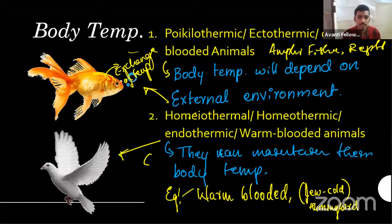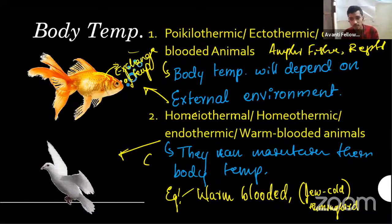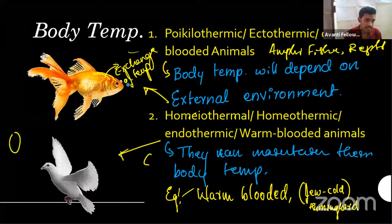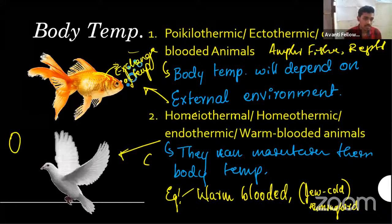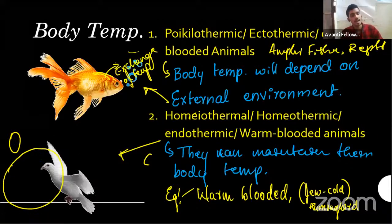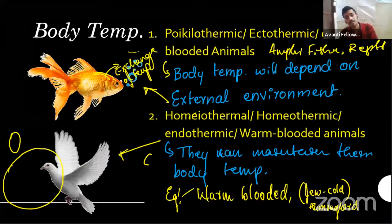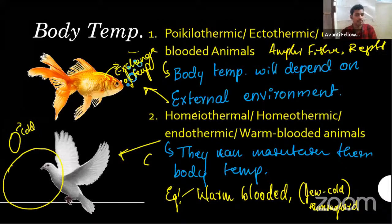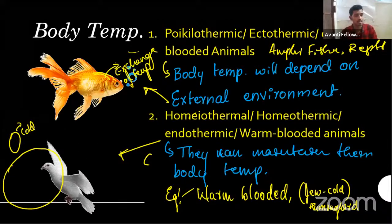Most birds are warm-blooded; very few are cold-blooded — for example, hummingbird. We will learn about poikilotherms again in ecology. The small size means the outer surface area is larger, making it harder to maintain body temperature, so they tend toward cold-bloodedness.